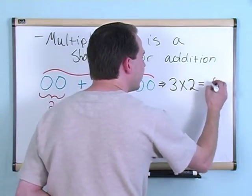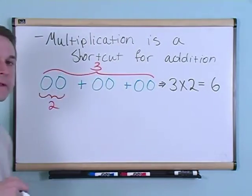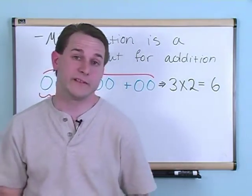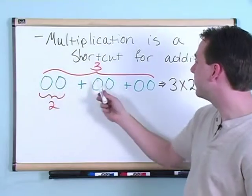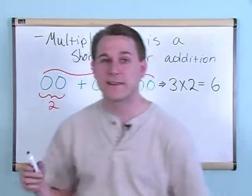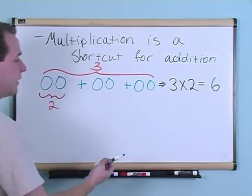And you already know that the answer is six. You already know that the answer is six because we already told you that you already counted that this is six. When you add up all the stuff, you get six. So you see that multiplication is...